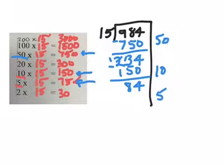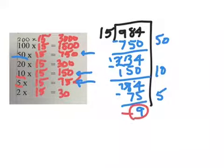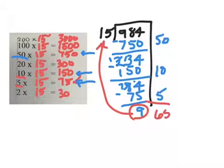And that's 5 15s. So then I subtract, and I get 9. Okay, so this number is less than my divisor, so I know I need to stop. And then I add up these numbers, and I get 65, so my answer is 65 remainder 9.